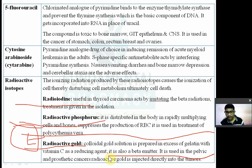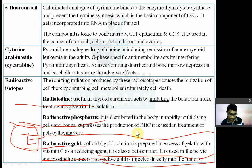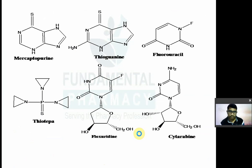Radioactive iodine, radioactive phosphorus, and radioactive gold all emit beta rays. Radioactive gold is injected directly into tumors and is used in pelvic and prostate cancer.